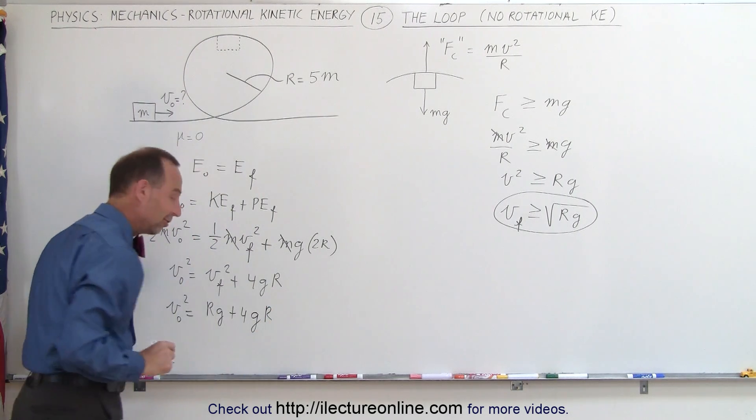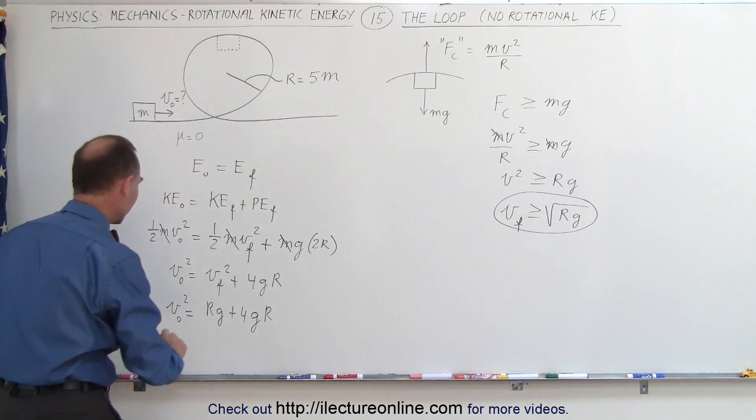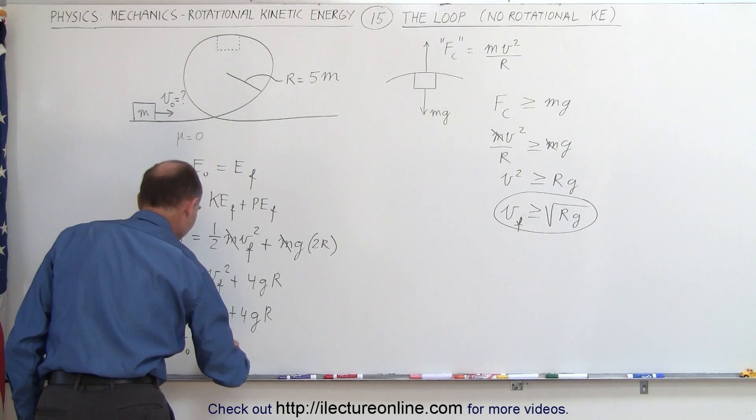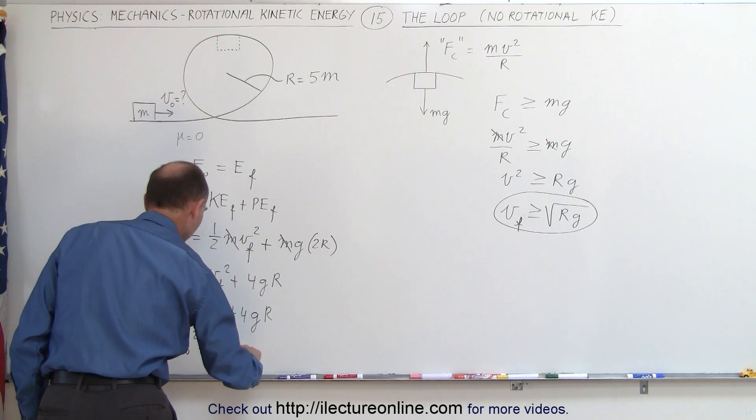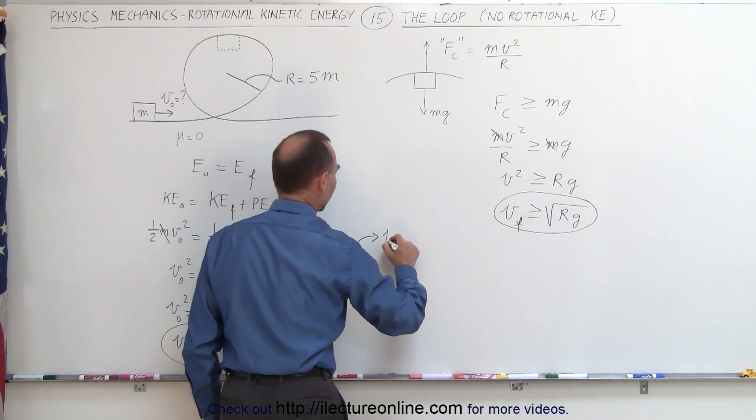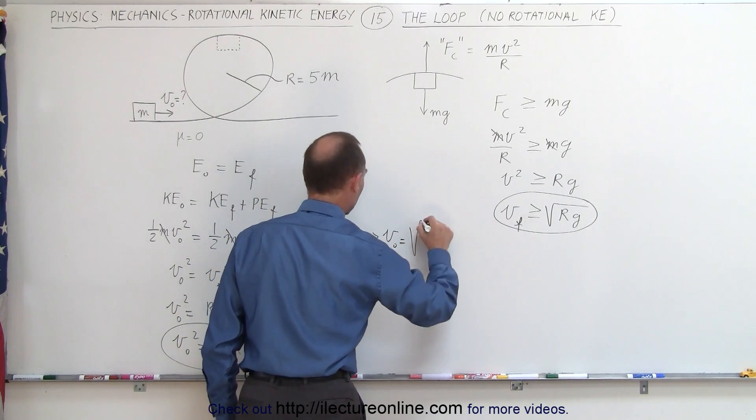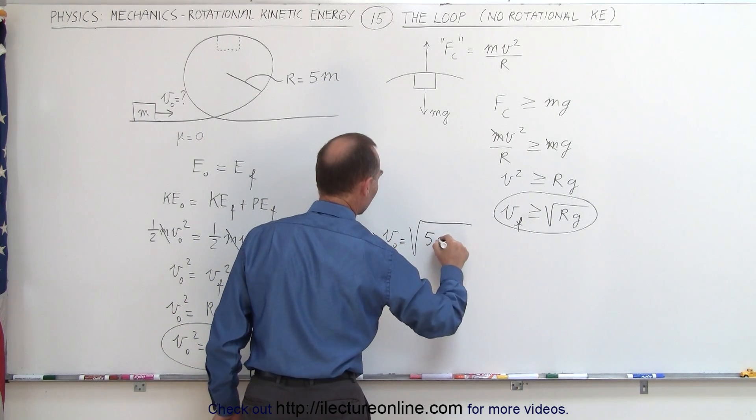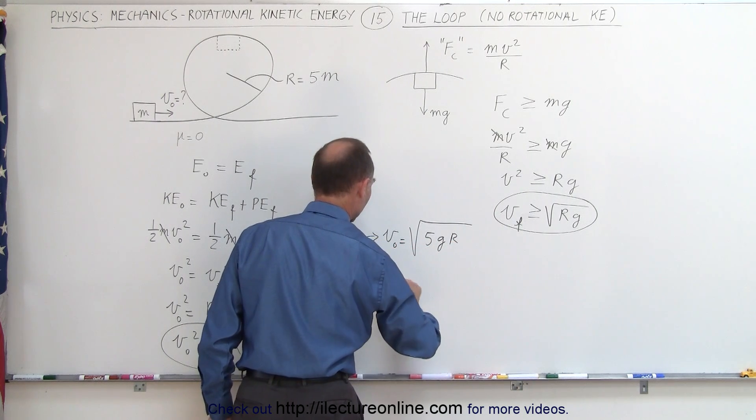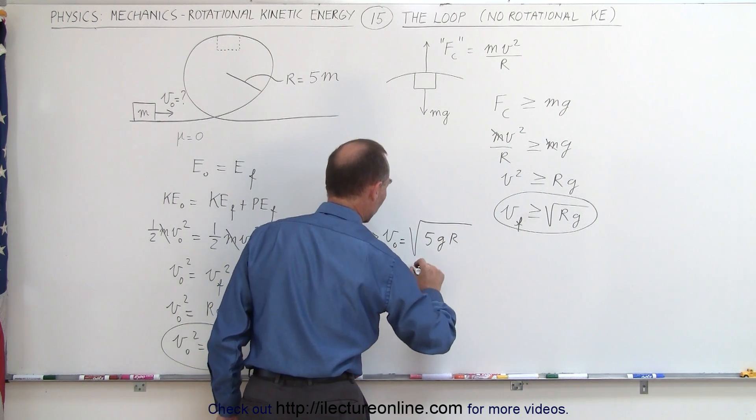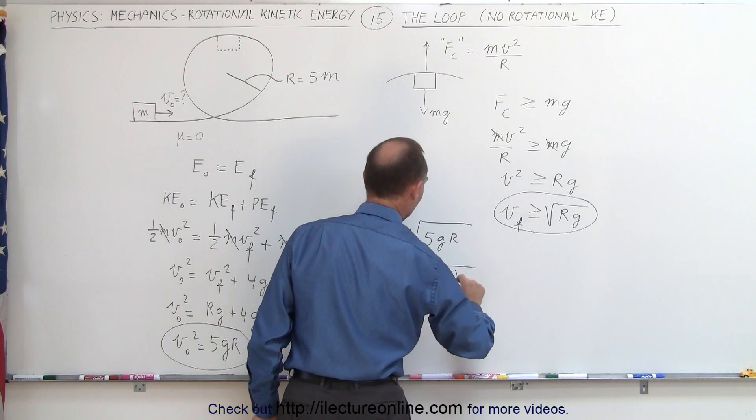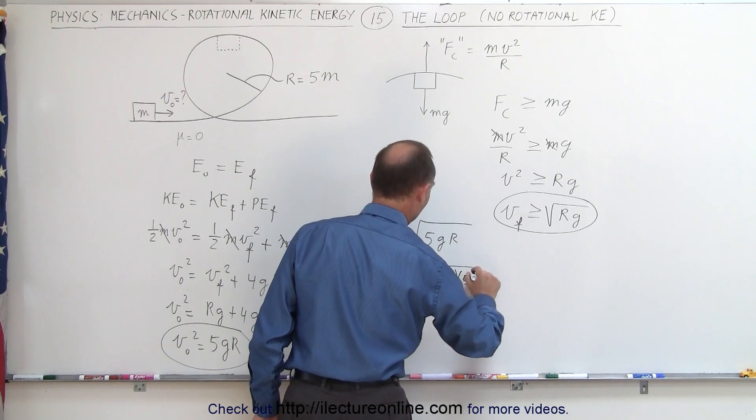Of course r times g is the same as g times r. In other words, v initial squared must be equal to at least 5g times r. Solving this for v initial, you can say v initial is equal to the square root of 5gr. Then we'll plug the values in. V initial must be at least the square root of 5 times 9.8 times the radius, which is 5.